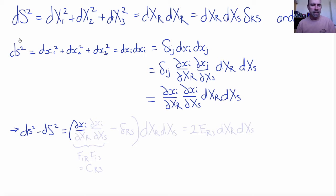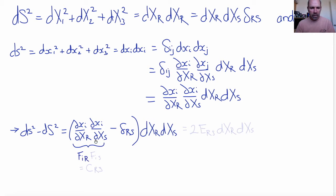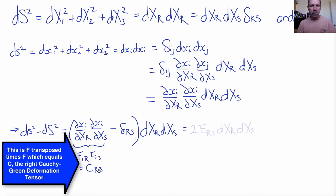Therefore, the difference between ds² and dS² is [(∂xi/∂Xr)(∂xi/∂Xs) − δrs] dXr dXs. Notice that ∂xi/∂Xr is Fir and ∂xi/∂Xs is Fis — in other words, this is F-transpose F, which is C, the right Cauchy-Green deformation tensor. So this term is Crs, and Crs − δrs equals 2Ers, the Lagrangian finite strain tensor.